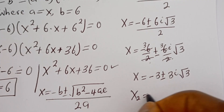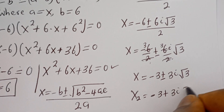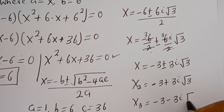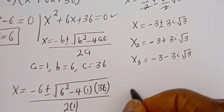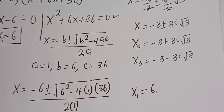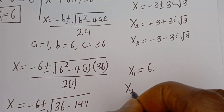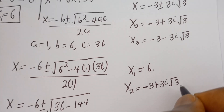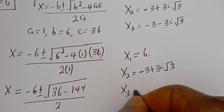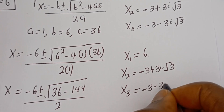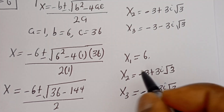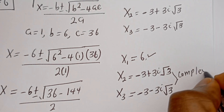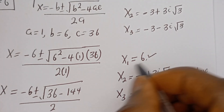Therefore, x₂ is equal to minus 3 plus 3i root 3, and x₃ is equal to minus 3 minus 3i root 3. Our final answer: x₁ is equal to 6, x₂ is equal to minus 3 plus 3i root 3, and x₃ is equal to minus 3 minus 3i root 3. You can see that we have one real solution and two complex roots. This is the real root that we have.